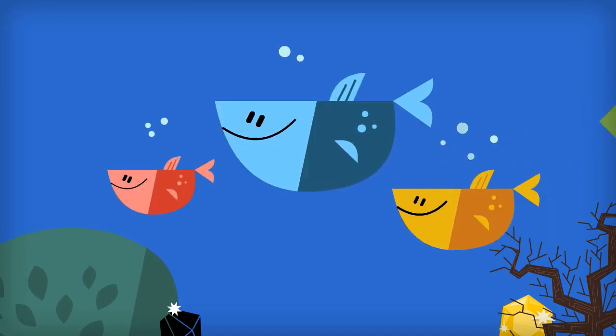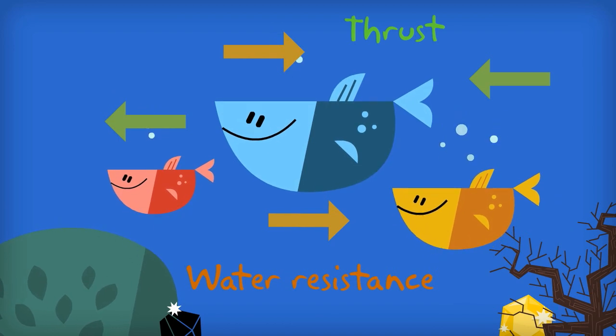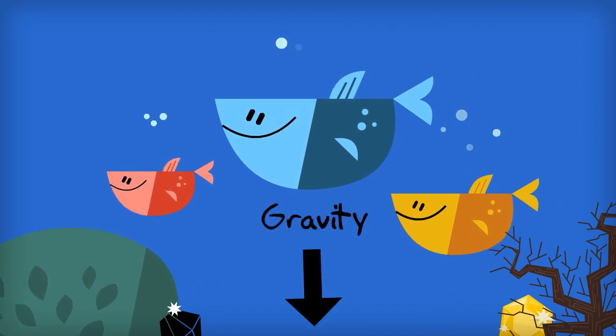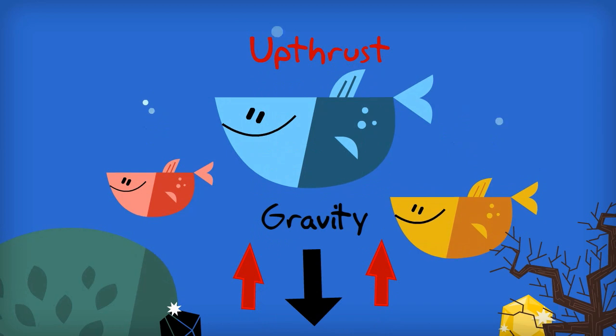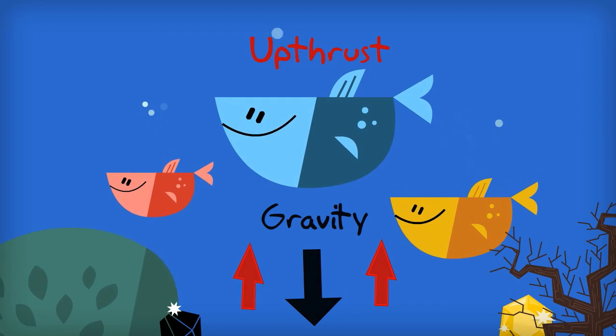As a fish swims forward, water resistance acts in the opposite direction. While gravity pulls the fish towards the bottom of the water, the upthrust exerts an upward force that counteracts gravity.